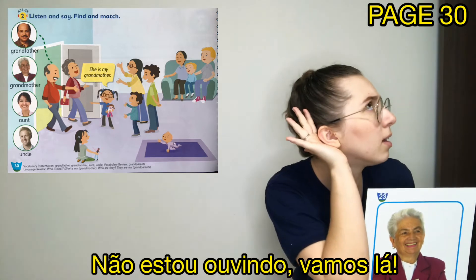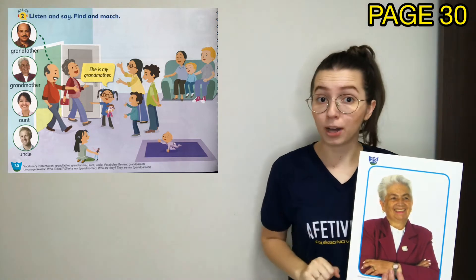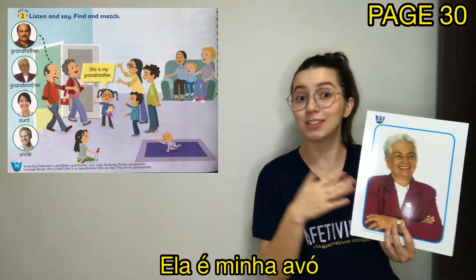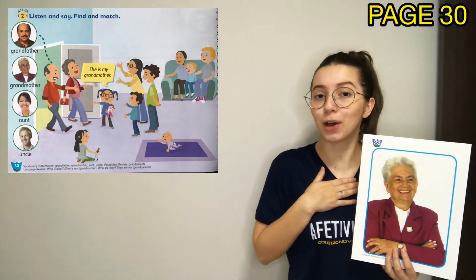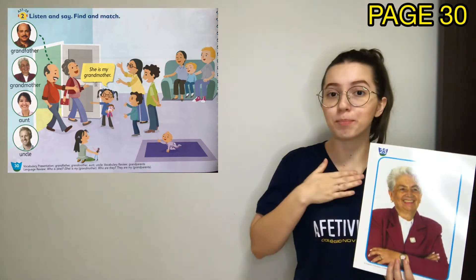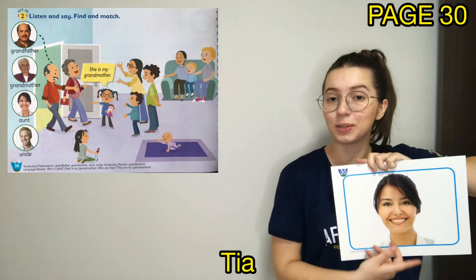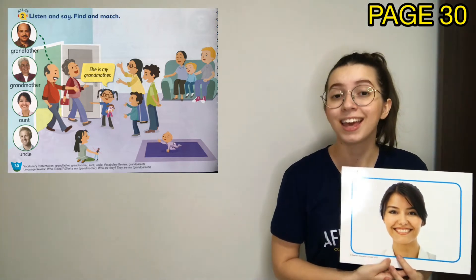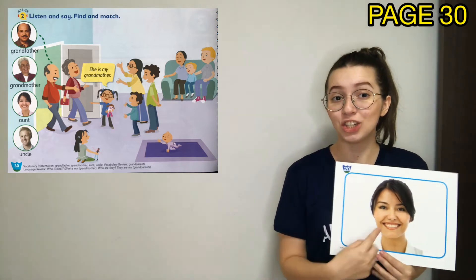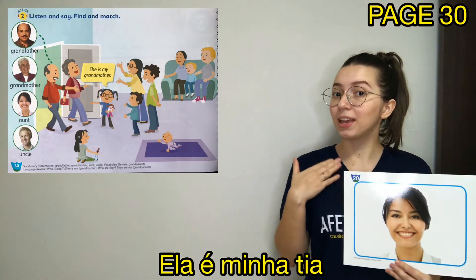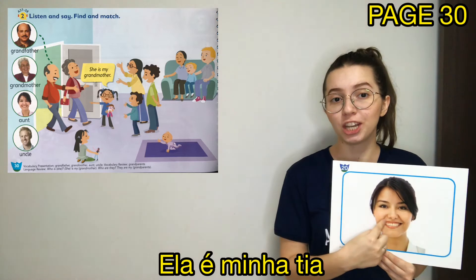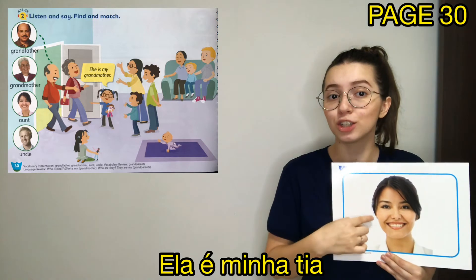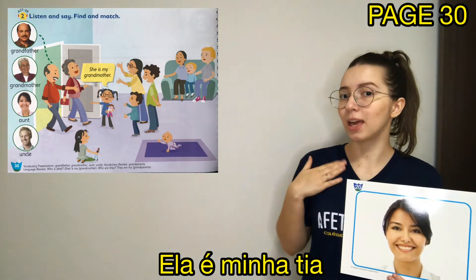I am not listening. Come on! Grandmother. Very good! She is my grandmother. Aunt. Repeat! Aunt. She is my aunt. She is my aunt.